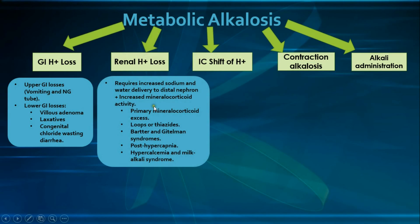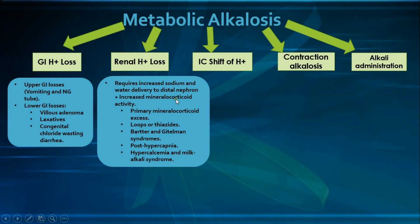For renal hydrogen ion loss, two conditions must be fulfilled: increased sodium and water delivery to the distal nephron, and increased mineralocorticoid activity. The sodium reabsorbed in the distal nephron creates a more electronegative tubular lumen, favoring both hydrogen ion and potassium secretion. Mineralocorticoids activate both the hydrogen ATPase pump and sodium-potassium ATPase pump, both favoring hydrogen ion secretion into the lumen.